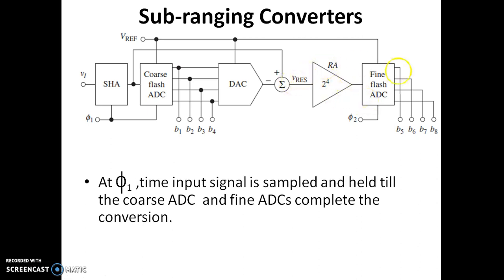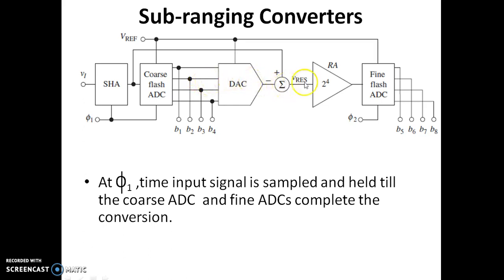At time phi 1, the input signal is sampled and held until both the coarse ADC and fine ADCs complete their conversion process. At time t equal to phi 1, the input data from VI is sampled and held using the sample and hold circuit. It is given to the coarse flash ADC, which takes some time to convert the analog to digital. The difference is obtained using the subtractor, and a residue amplifier gives the output. Later the fine flash ADC gives its output.